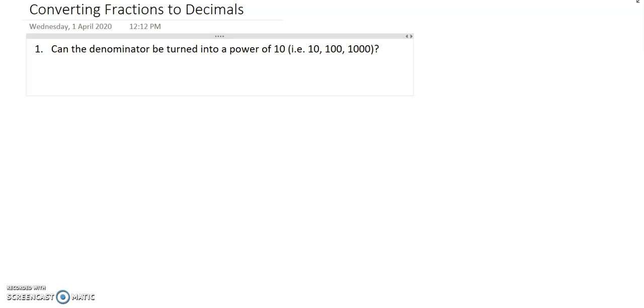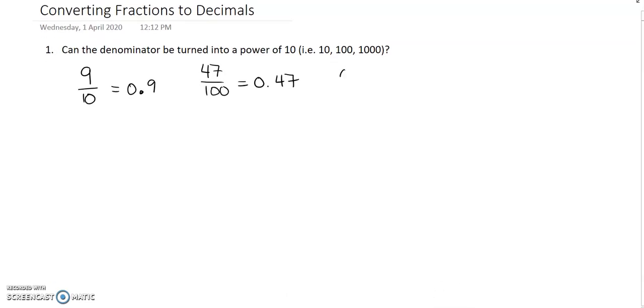Our first example is if I have 9 over 10. So if I've got 9 over 10, then my decimal is just going to be 0.9. Let's try another fraction. What about if my fraction is 47 over 100? In this case, I can just write 0.47. And here's another example. So if I have 603 over 1000, then I can just write 0.603.